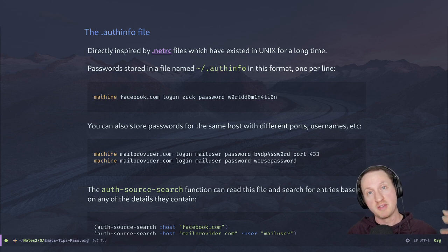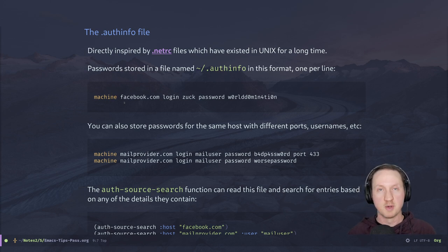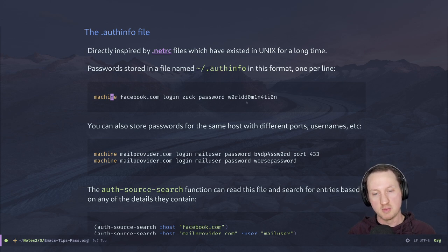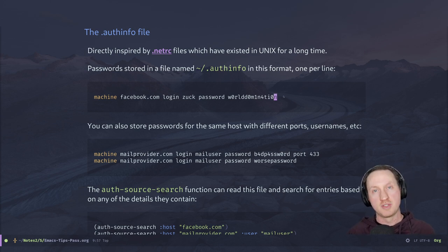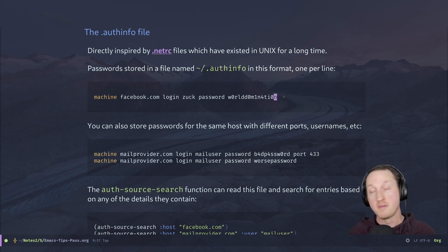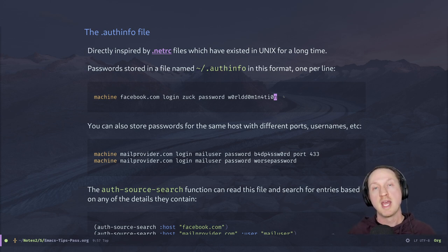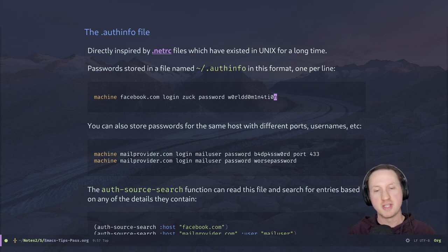Looking at an example line from an auth-info file: the first thing you see is 'machine', because this line is relative to a given machine. The machine is facebook.com. The login is 'zuck' and the password is 'world domination'. This defines one account for the facebook.com server with a particular login and password. The auth-source library can read this .authinfo file, extract this information, and make it available to any package inside Emacs.